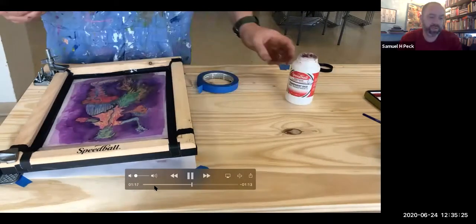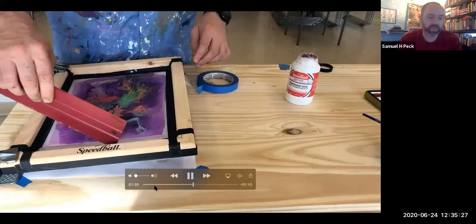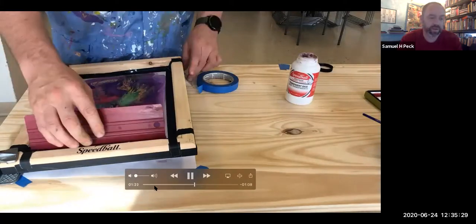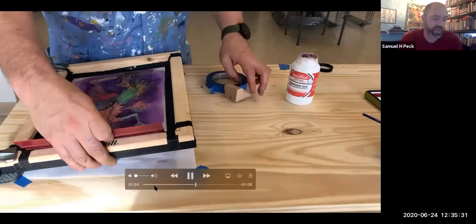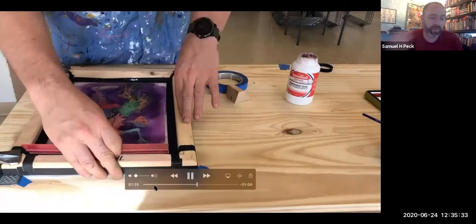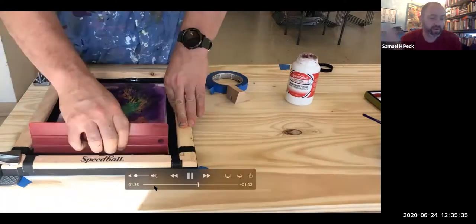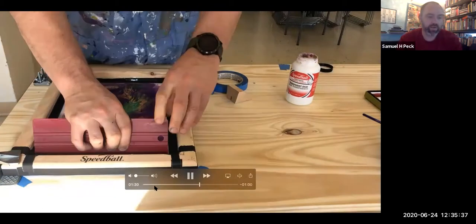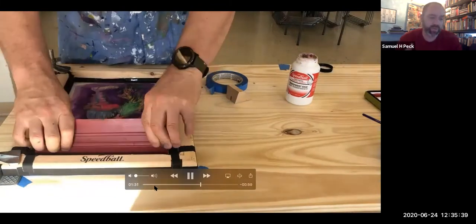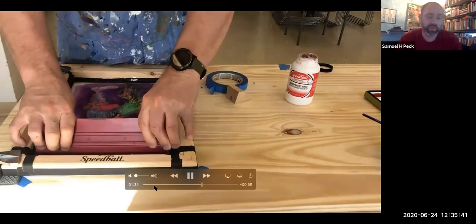You're pulling the transparent base down the screen multiple times until the entire surface of the paint and image is covered. The transparent base will reactivate the watercolor, allowing the image to be transferred to the page. Add more transparent base if necessary.